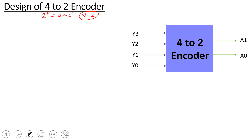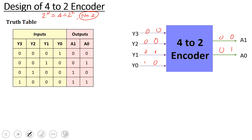Now for the truth table: when Y0 is activated, output is 0, 0. When Y1 is activated, output is 0, 1. When Y2 is activated, output is 1, 0. When Y3 is activated, output is 1, 1. So the two outputs give 4 possible combinations. This is the truth table for the 4-to-2 encoder.